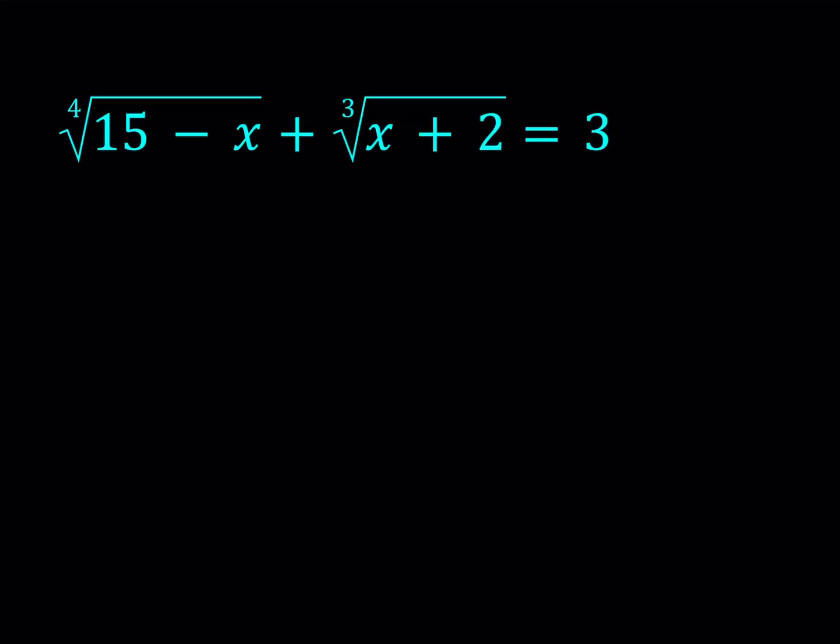So now I'm going to call this expression a and I'm going to call the second part b so that from here I get a simple equation which is a plus b equals 3. That looks simple but it contains two variables so we have to find another equation that will help us solve it as a system. Otherwise we're going to get infinitely many solutions but we know that there aren't infinitely many.